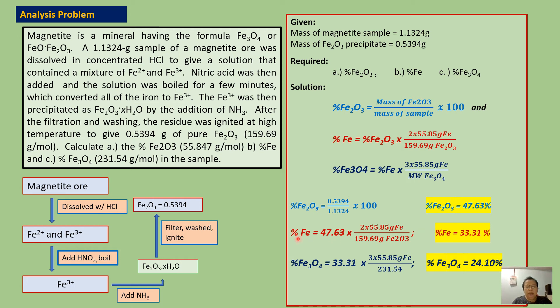Now solving for percent iron. This is equal to 47.63 percent of Fe2O3 times 2 times 55.85 grams iron divided by 159.69 grams of Fe2O3. Notice that I multiply the molar mass of iron by 2 because 1 mole of Fe2O3 contains 2 moles of iron. Simplifying, the answer is 33.31 percent iron.